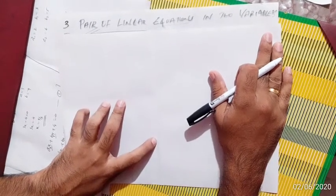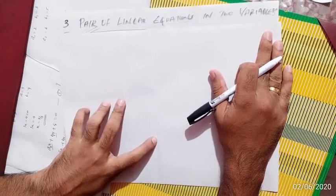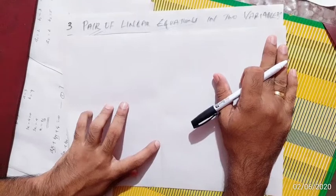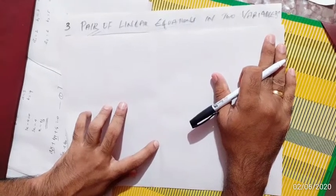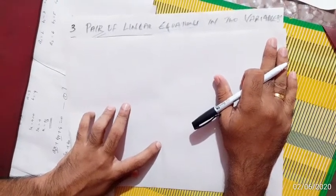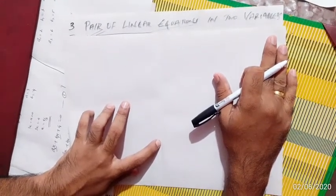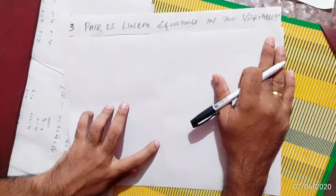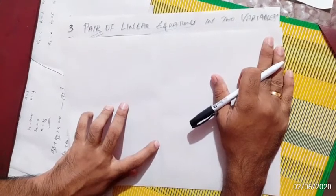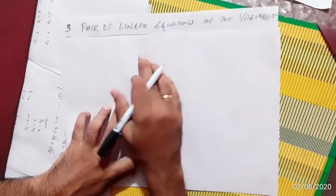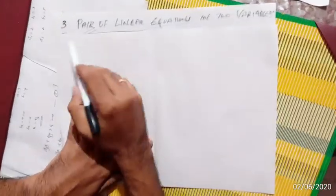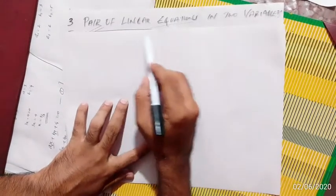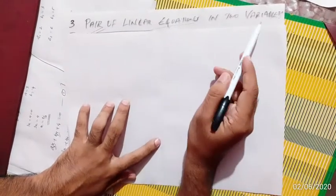Hello, welcome everyone. Today we are going to start our mathematical classes — hope everyone is fine and staying safe at home. We are going to discuss the third chapter: Pair of Linear Equations in Two Variables.